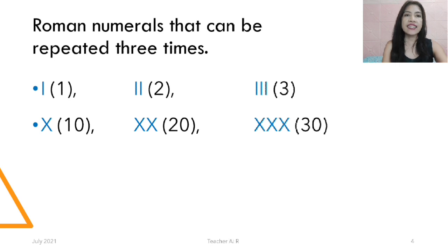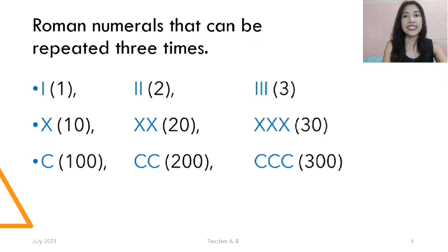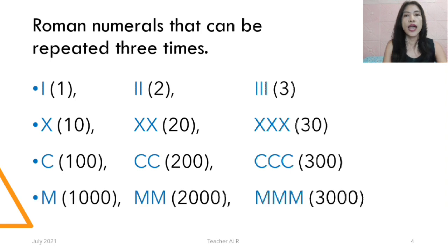X is 10, XX is 20, XXX is 30. C is 100, CC is 200, CCC is 300. M is 1000, MM is 2000, and MMM is 3000.